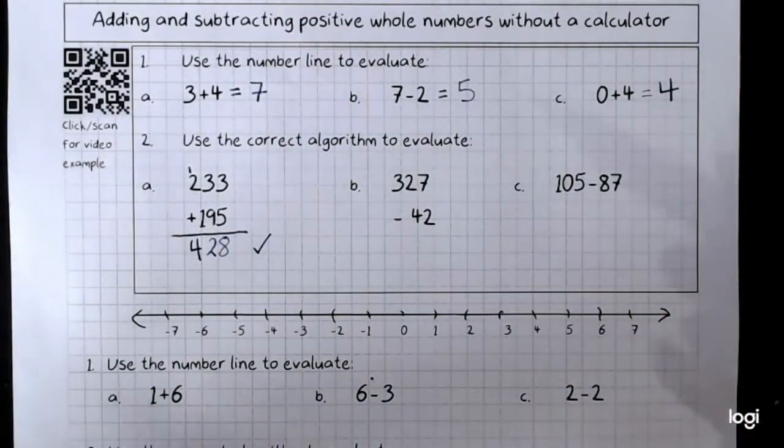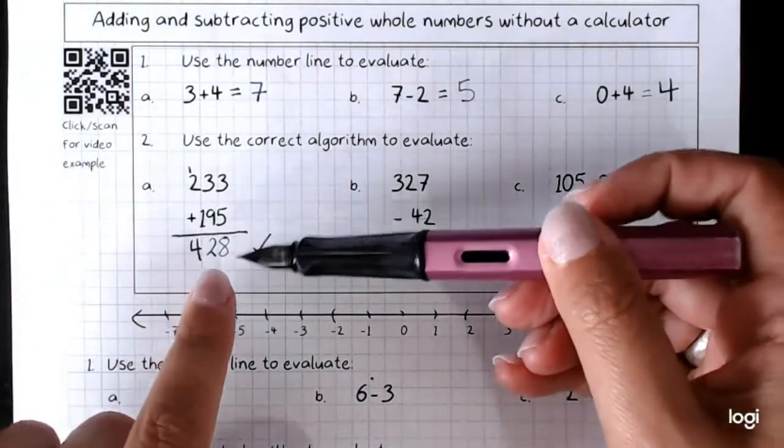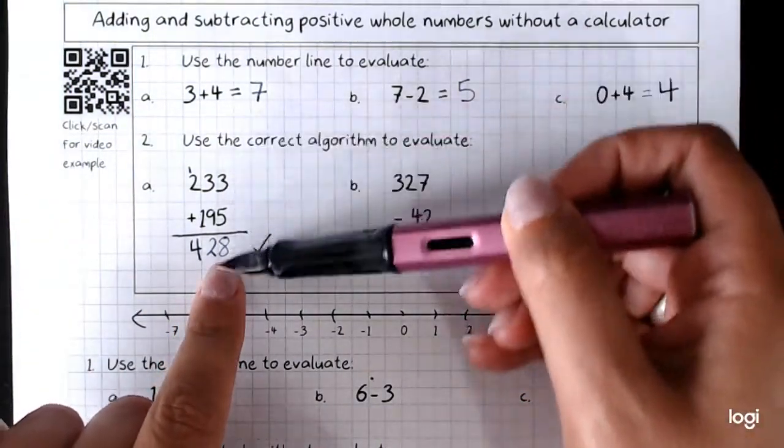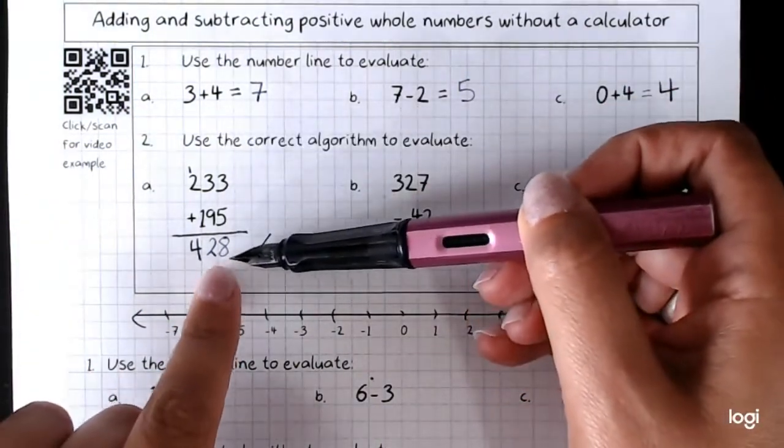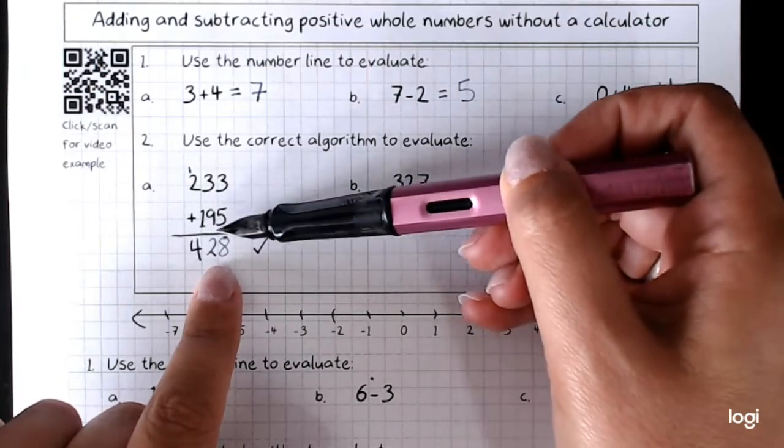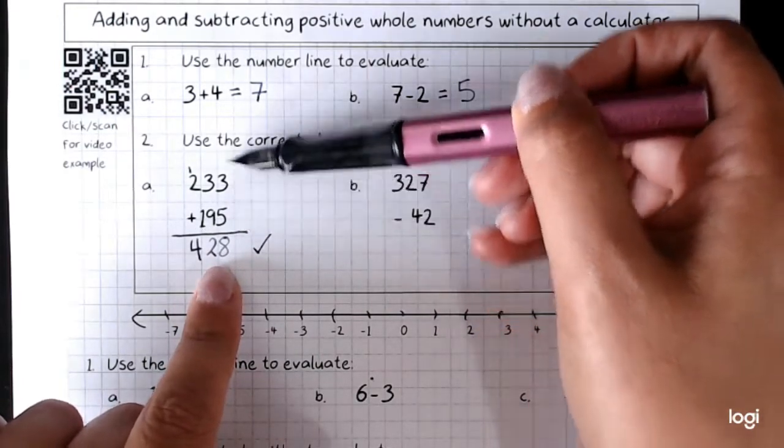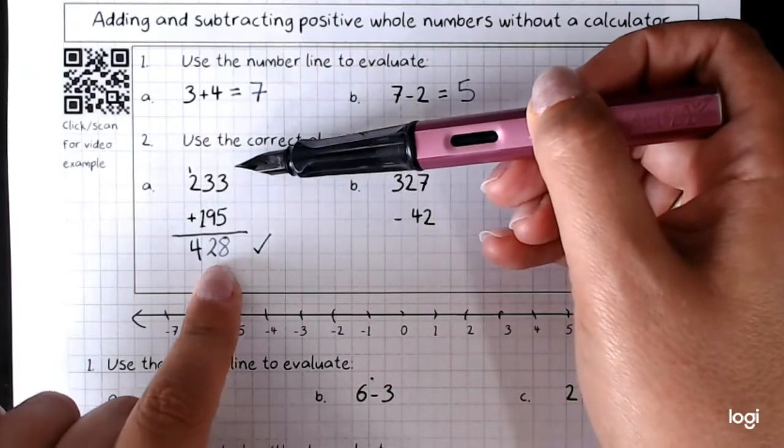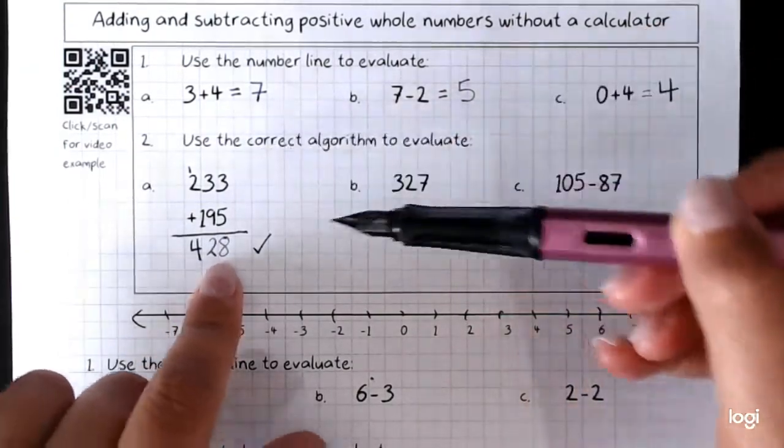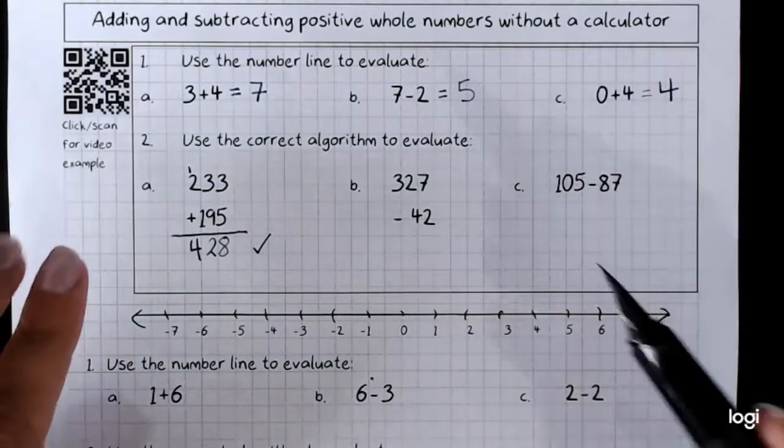And of course, you can always try quickly reversing what you've done. Because if we did 428 minus 195, we'd get this 233. Since we've got a calculator to check, we won't worry too much.